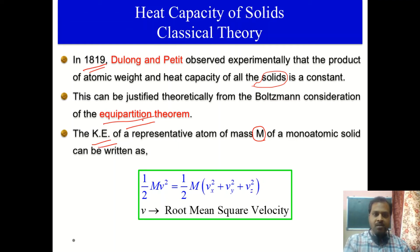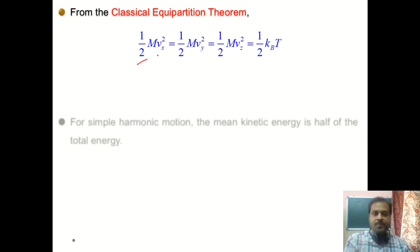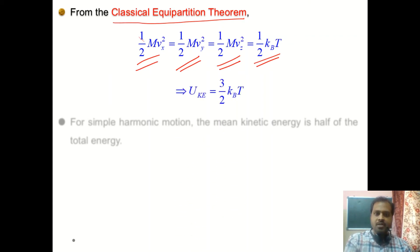If we apply the equipartition theorem to the vibrational motion of an atom inside the solid, then half mv² can be written component-wise as half mv_x², half mv_y², and half mv_z². Each of these components of kinetic energy is equal to half kT from the classical equipartition theorem. Since there are three degrees of freedom, the total kinetic energy of the system is three-halves kT for a single atom.